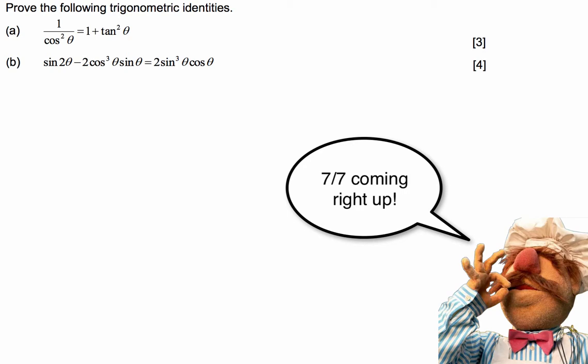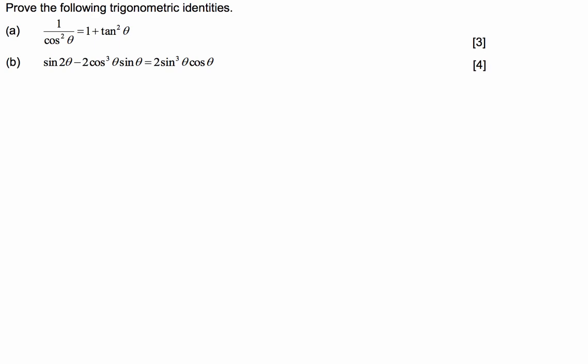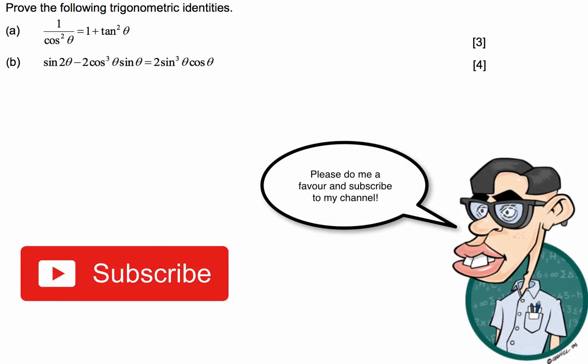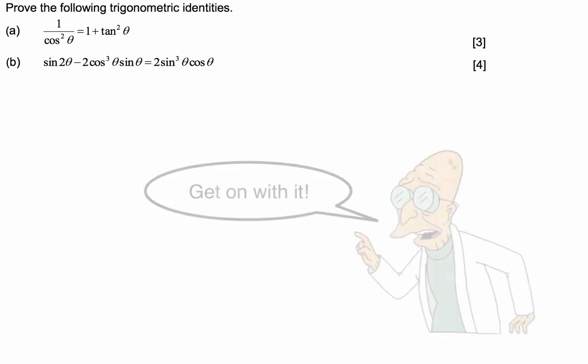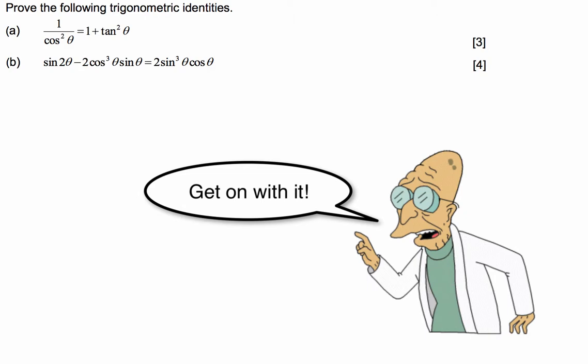The trick with trigonometric identities is knowing all the moves. The only way you can become fluent in all the tricks and moves is through practice. There is no magic bullet, you've just got to go through many problems, and over time you'll just get more fluent at what you have to do. So without further ado, let's get onto these two problems.